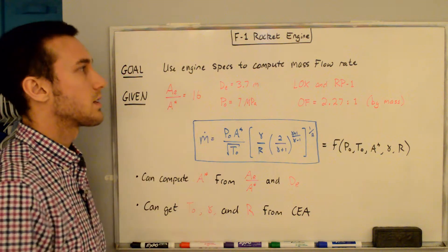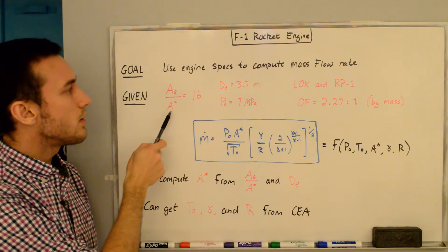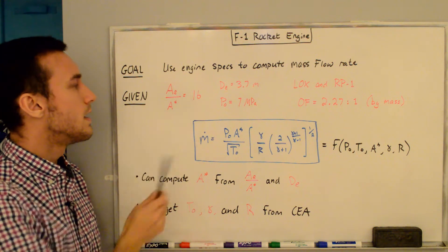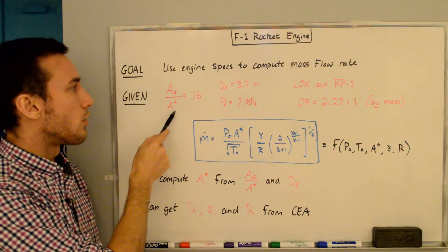We'll be using some engine specs that are readily available online to compute this mass flow rate, and those are given here. The first is that the area ratio of the nozzle is 16, meaning the exit area is 16 times the throat area.